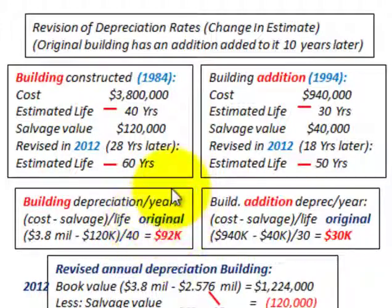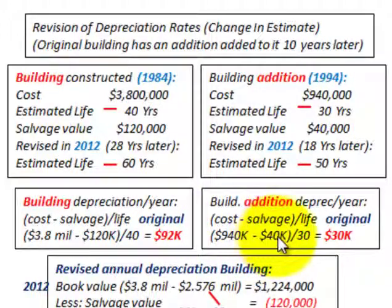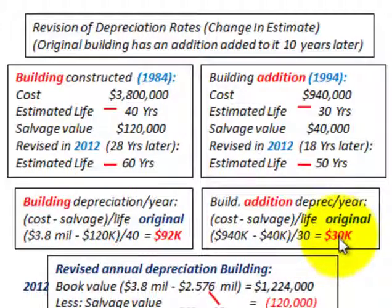For the building addition, using the same straight-line method: cost of $940,000 less salvage value of $40,000 divided by the original estimated life of 30 years gives us $30,000 per year. That's the original depreciation basis we calculated for the addition.